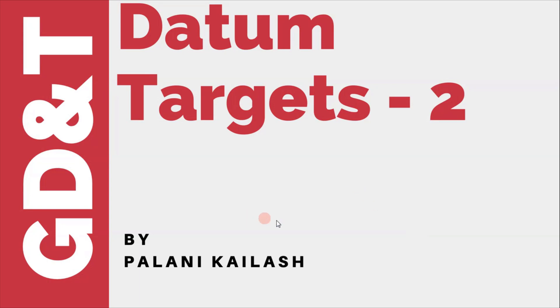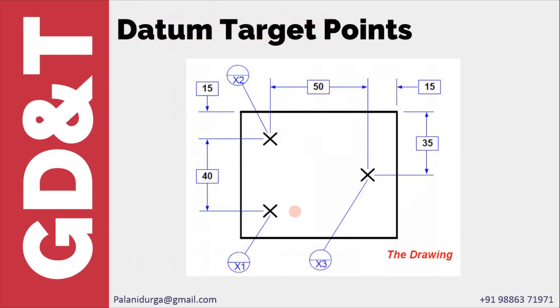Hello friends, this is the continuous video of datum targets. In this video we will be discussing how to apply datum targets in drawings and how to interpret datum targets in a drawing. There are three types of datum targets: datum target points, lines, and areas, which we have already discussed in the previous video. We first discuss datum target points.